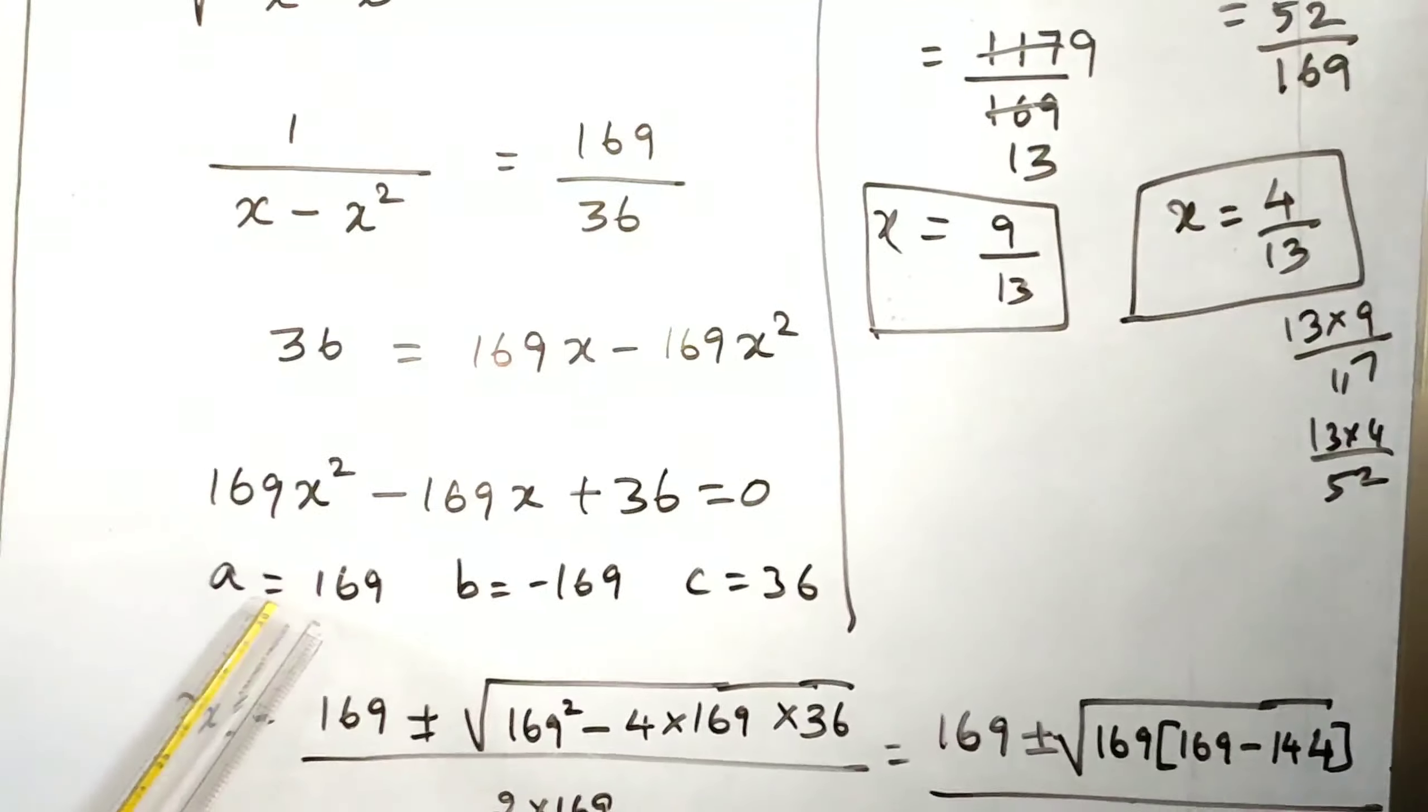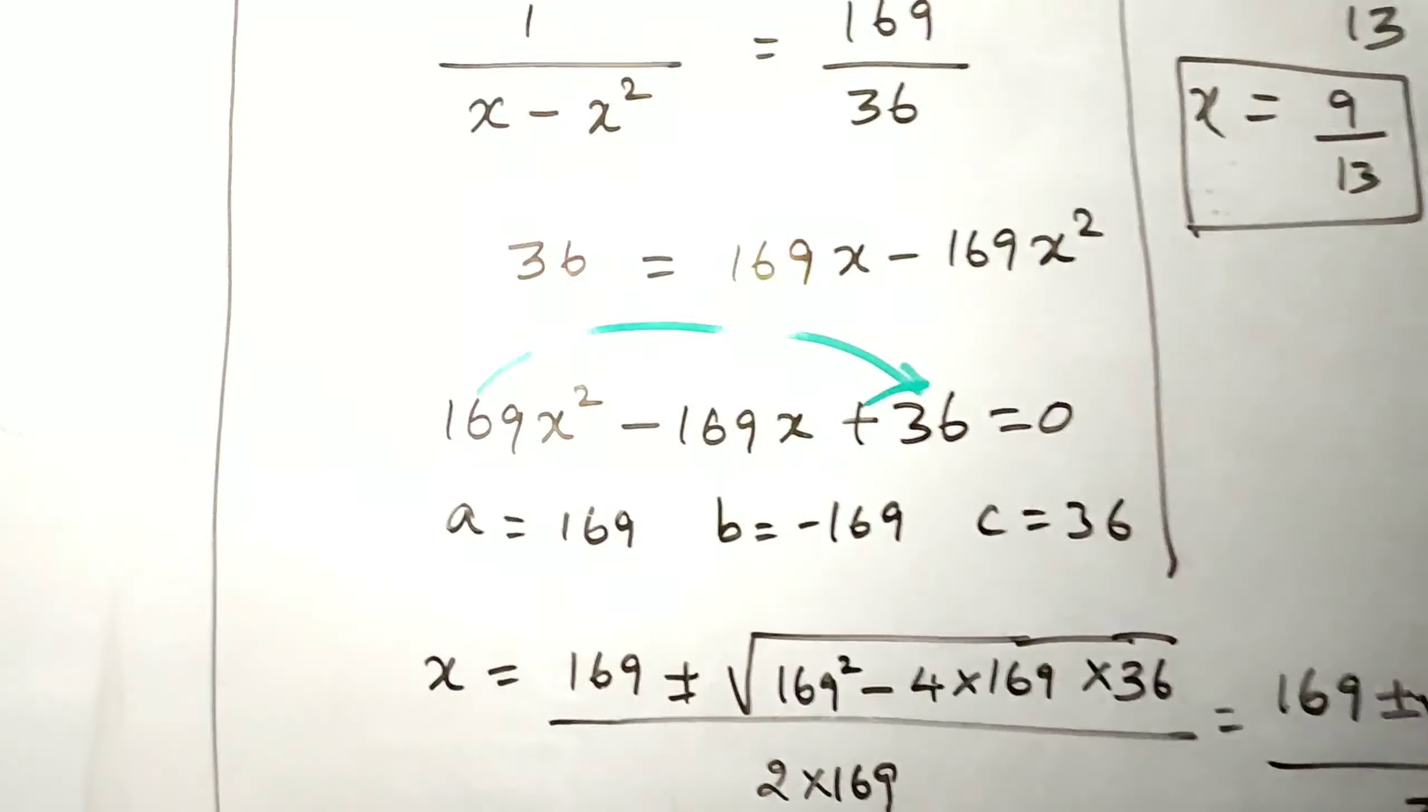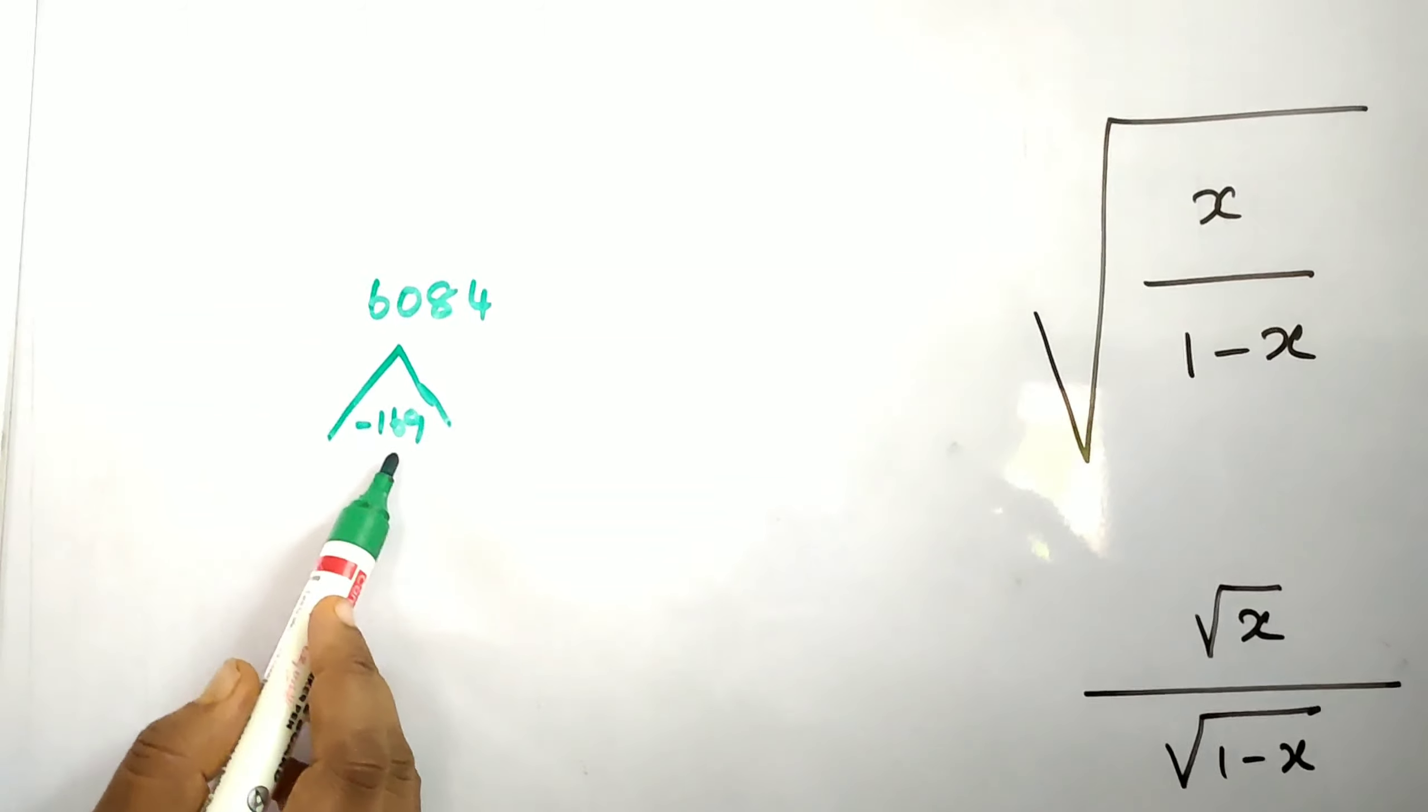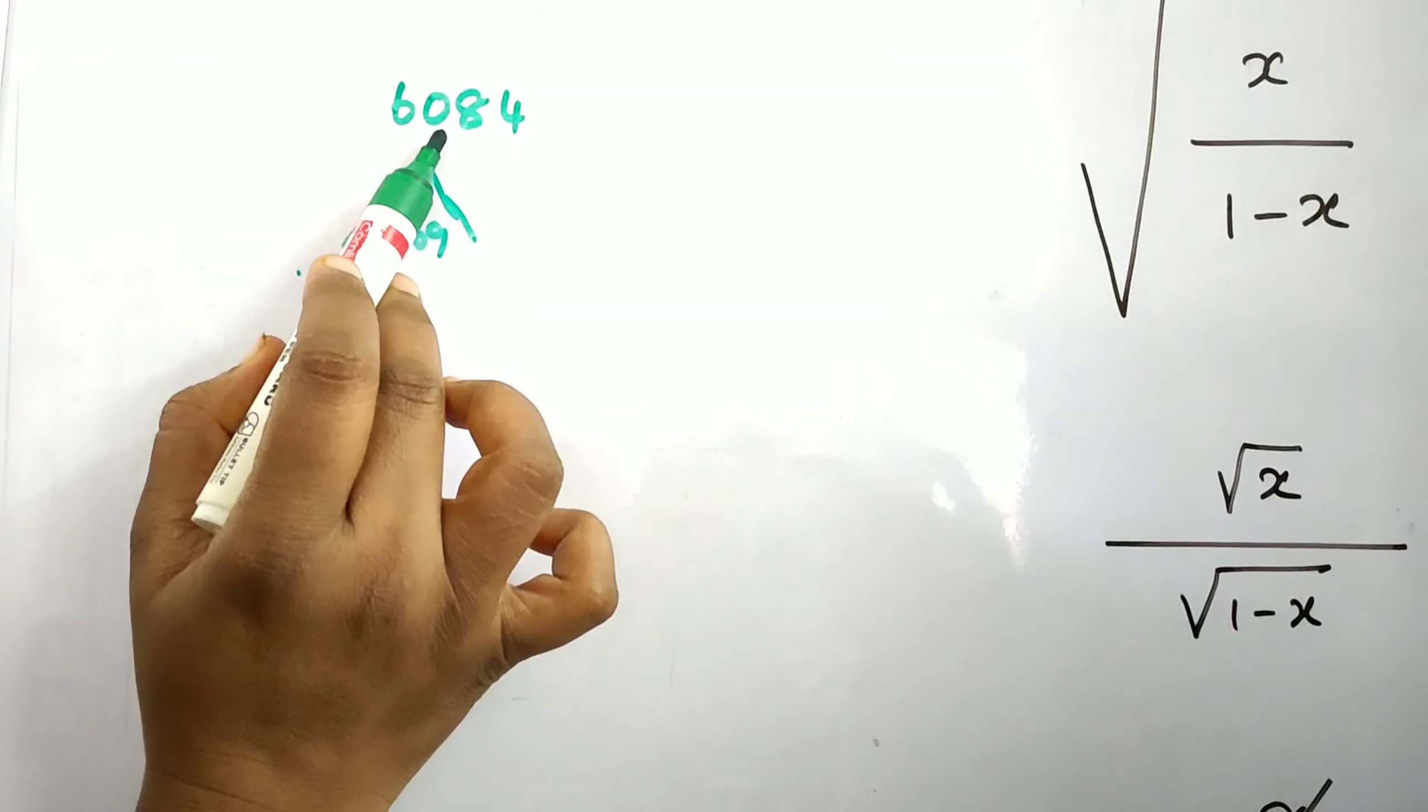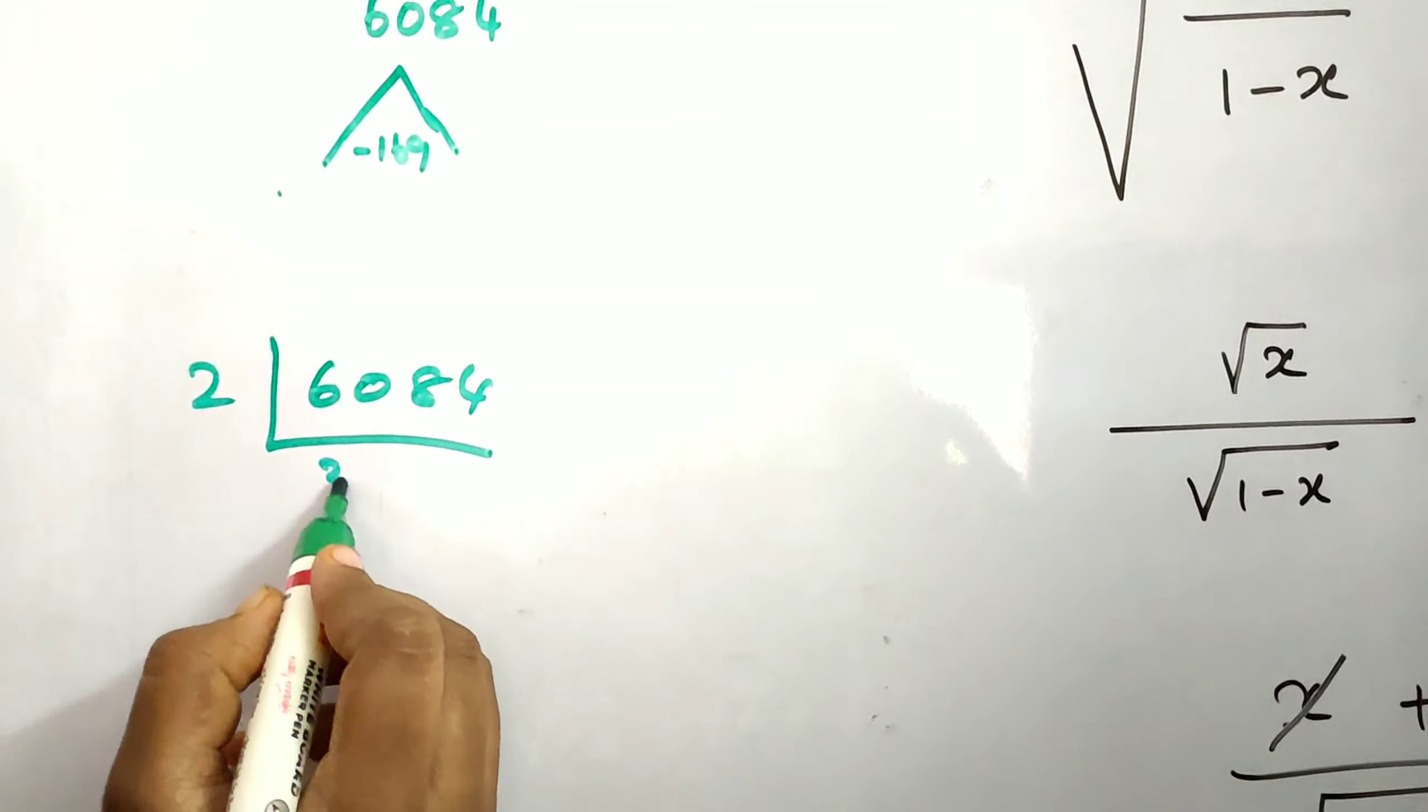Now solve by factorization method. Factorization means multiply the first coefficient and constant term. 169 times 36 is 6084, then the central coefficient is minus 169. Find two numbers whose multiplication gives 6084 and when added give minus 169.